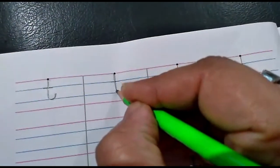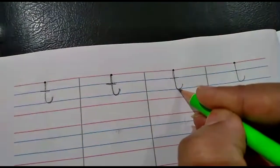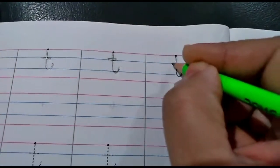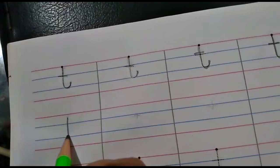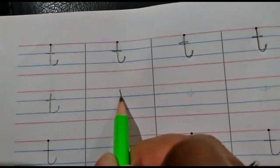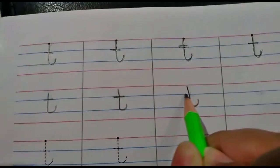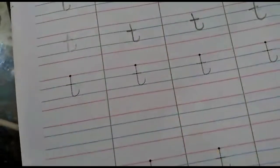Again - start from the red dot, come down, bump, and a sleeping line. Start from the dark dot, come down, bump, and sleeping line - t. Now let us write t independently. Start from the red line, come down, bump, and a sleeping line - t. Start from top, come down, bump, sleeping line - t. T says T, T says T.